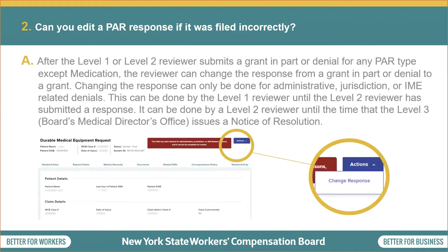Question 2: can you edit a PAR response if it was filed incorrectly? After the Level 1 or Level 2 reviewer submits a grant in PAR or denial for any PAR type except medication, the reviewer can change the response from a grant in PAR or denial to a grant. Changing the response can only be done for administrative, jurisdiction, or IME-related denial.